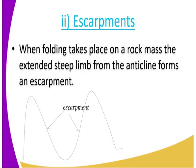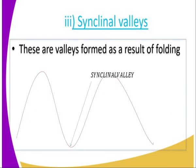Another feature is the escarpment. When folding takes place on a rock mass, the extended steep limb from the anticline forms an escarpment. When we have the folding taking place — the upfolds and downfolds — the steep face that is inclined is an escarpment. You can see this illustrated in the diagram showing fold mountains, anticlines, and synclines.